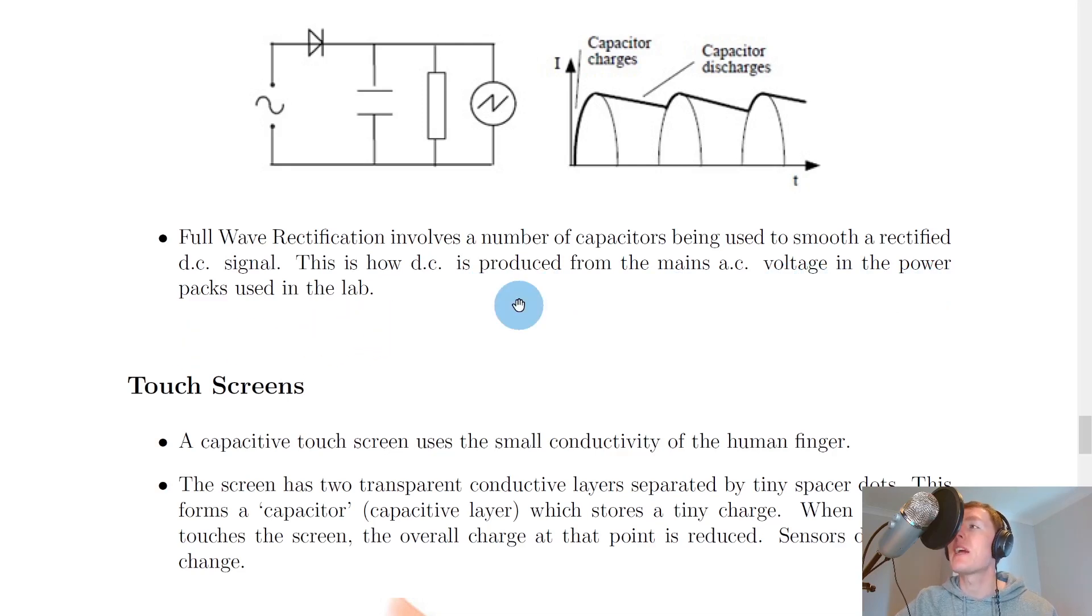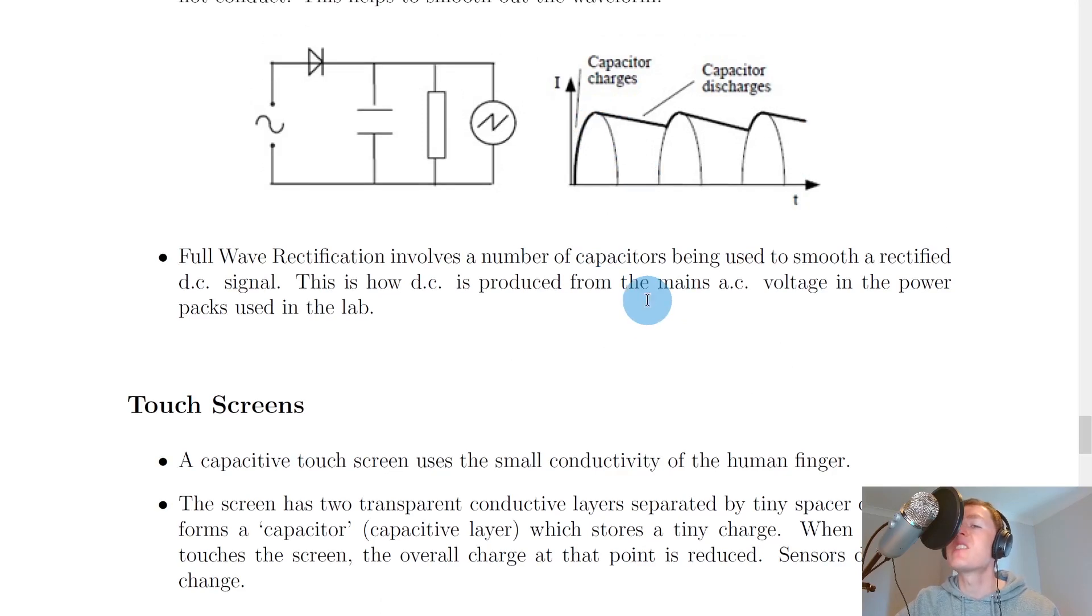If you've ever used a power supply or power pack in your physics classroom, then it's likely that you've used this property of smoothing without realizing it. You plug your power pack into the mains using alternating current, so in order to produce a DC signal, you need to smooth out that AC waveform to get a straight line. Remember, a DC signal on an oscilloscope trace is a straight line for output voltage, whereas for AC it's a wave-like pattern.